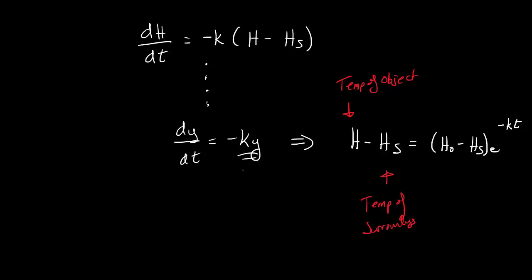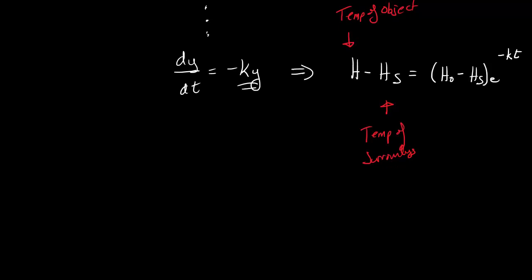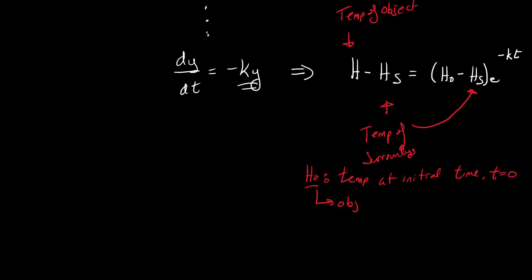We have to figure out what H0 and HS stand for. We already defined HS, so we need to define H0. H0 is going to be the temperature at the initial time, at t equals zero. H0 is the initial temperature of the object at time equals zero. Let's go ahead and use this and try an example.